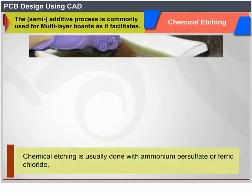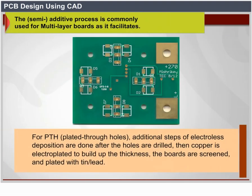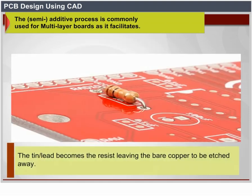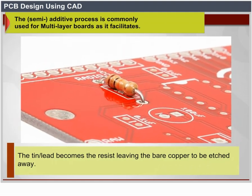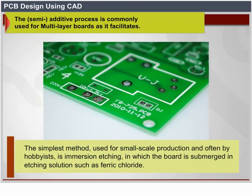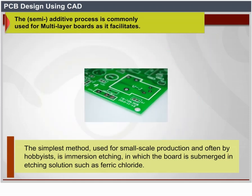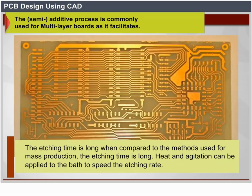Chemical etching is usually done with ammonium persulfate or ferric chloride. For PTH (plated through holes), additional steps of electroless deposition are done after the holes are drilled, then copper is electroplated to build up the thickness. The boards are screened and plated with tin or lead, which becomes the resist, leaving bare copper to be etched away. The simplest method for small-scale production and hobbyists is immersion etching, in which the board is submerged in the etching solution such as ferric chloride. Heat and agitation can be applied to speed the etching rate.